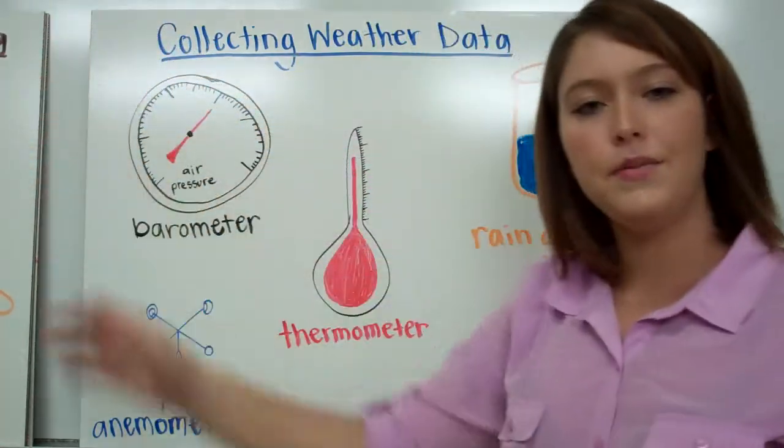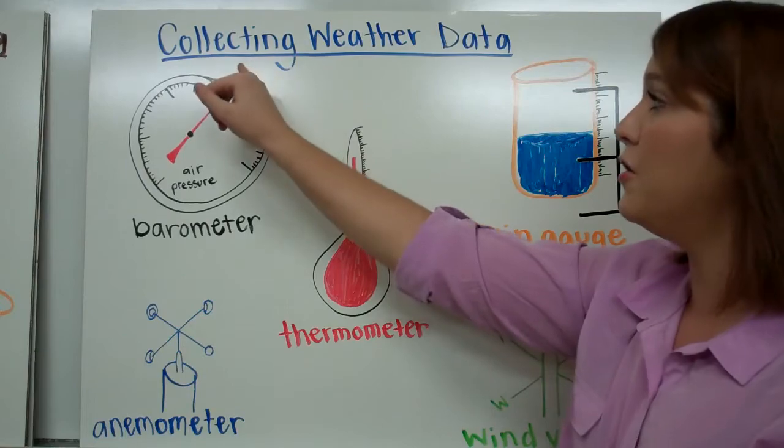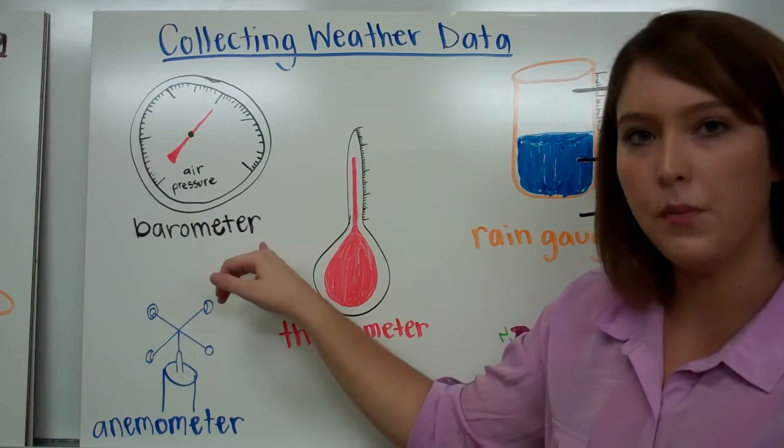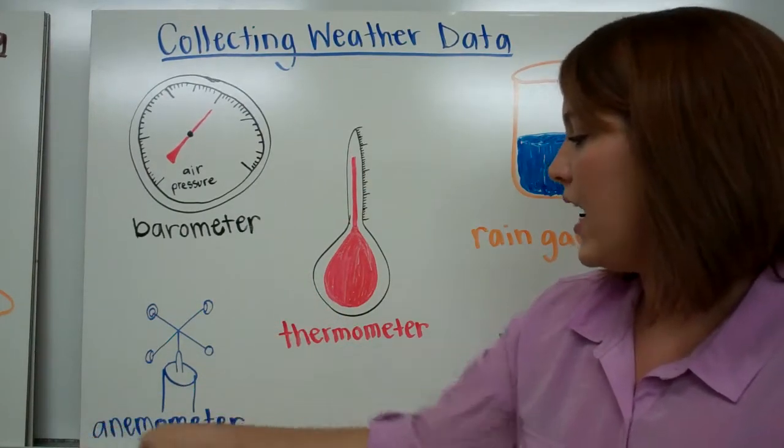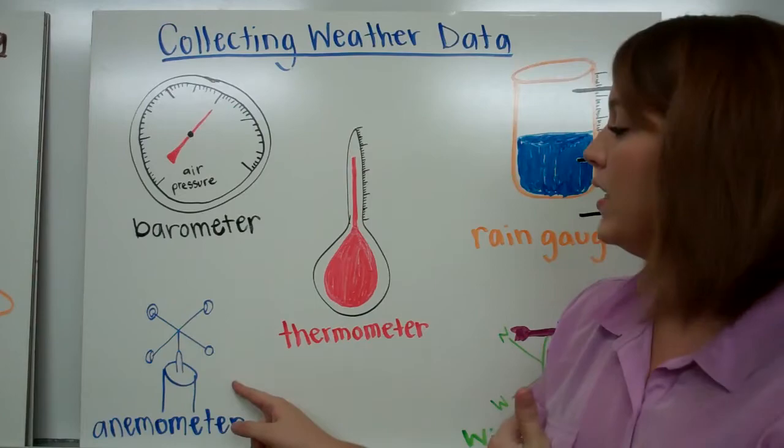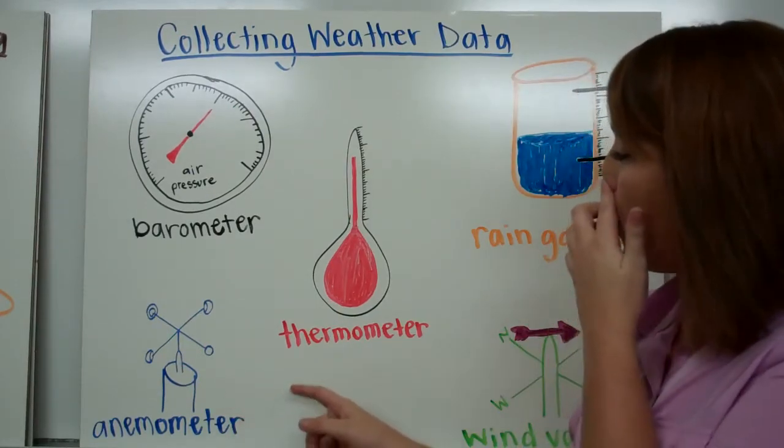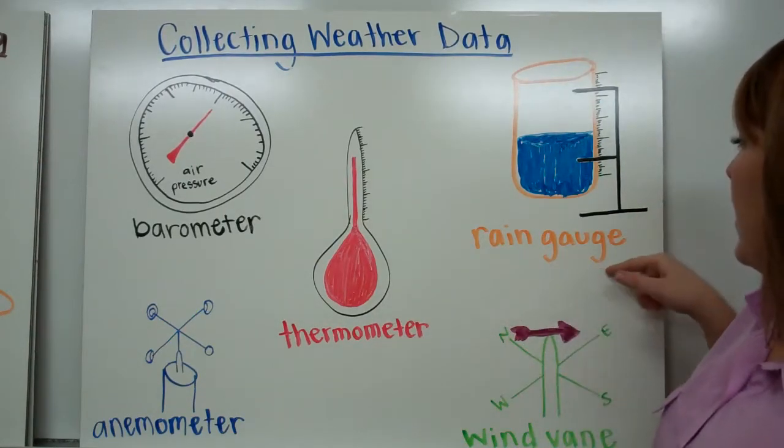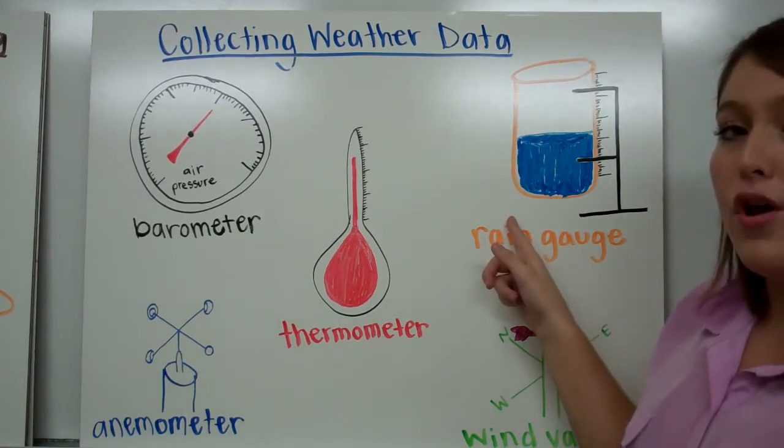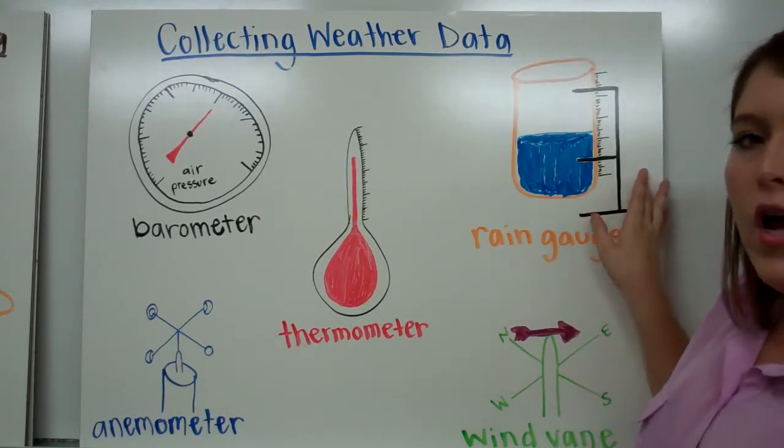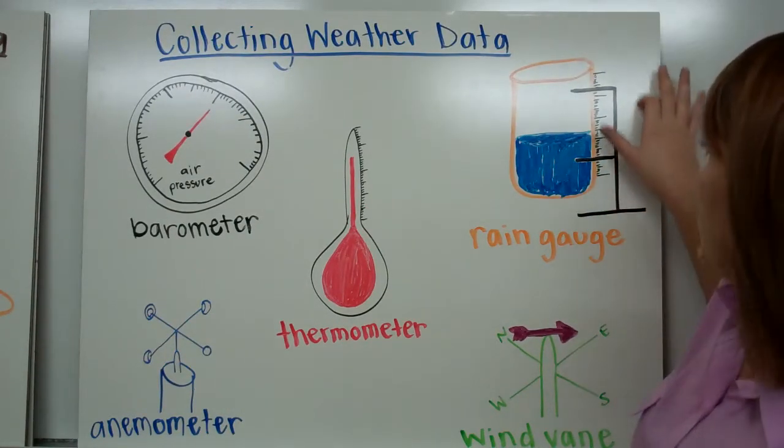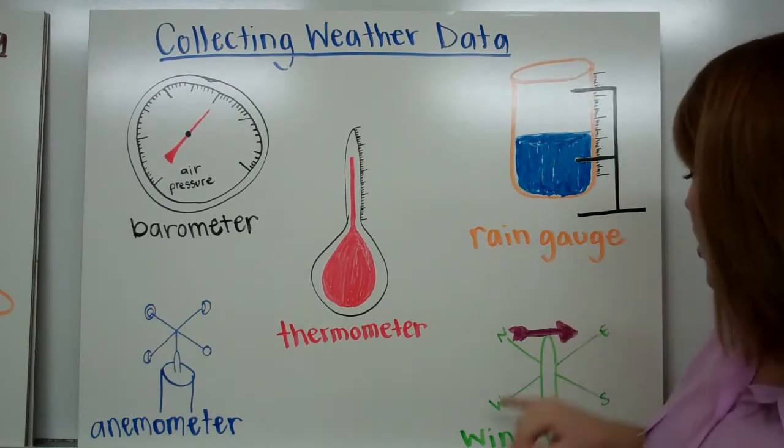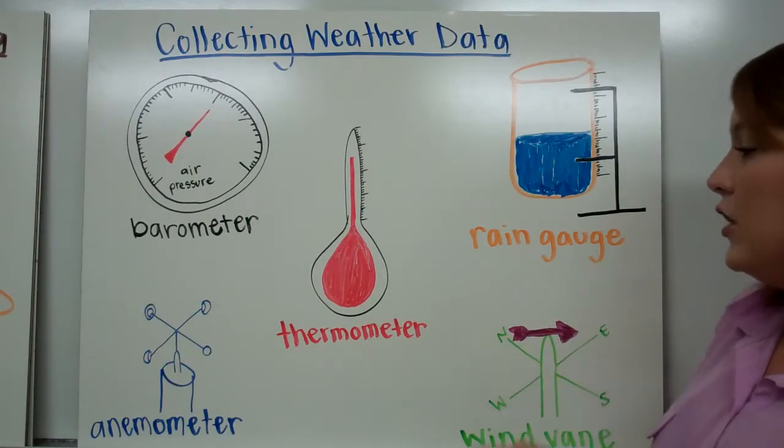There are multiple different types of instruments that we can use to collect weather data. We can use a barometer, which helps us measure air pressure in the air. We can use an anemometer, which helps us determine the wind speed in the atmosphere. We can use thermometers to determine the temperature of the air. We can use a rain gauge to observe the amount of precipitation over a period of time. It will be left out for an hour or a day and measure how much precipitation has occurred. We can also use a wind vane to determine the wind direction.